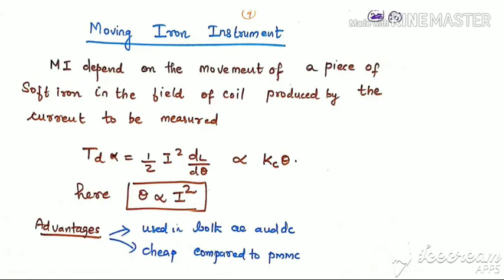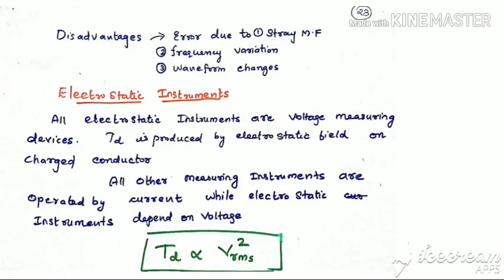Moving iron instruments depend on the movement of a piece of soft iron in the field of a coil carrying the current to be measured. Deflecting torque Td equals ½·I²·(dL/dθ), which is proportional to K·θ. So θ is proportional to I² — the scale is non-linear. Advantages: can measure both AC and DC; cheap compared to PMMC. Disadvantages: error due to stray magnetic fields since the field is not as strong as in PMMC; also errors due to frequency variation and waveform changes.